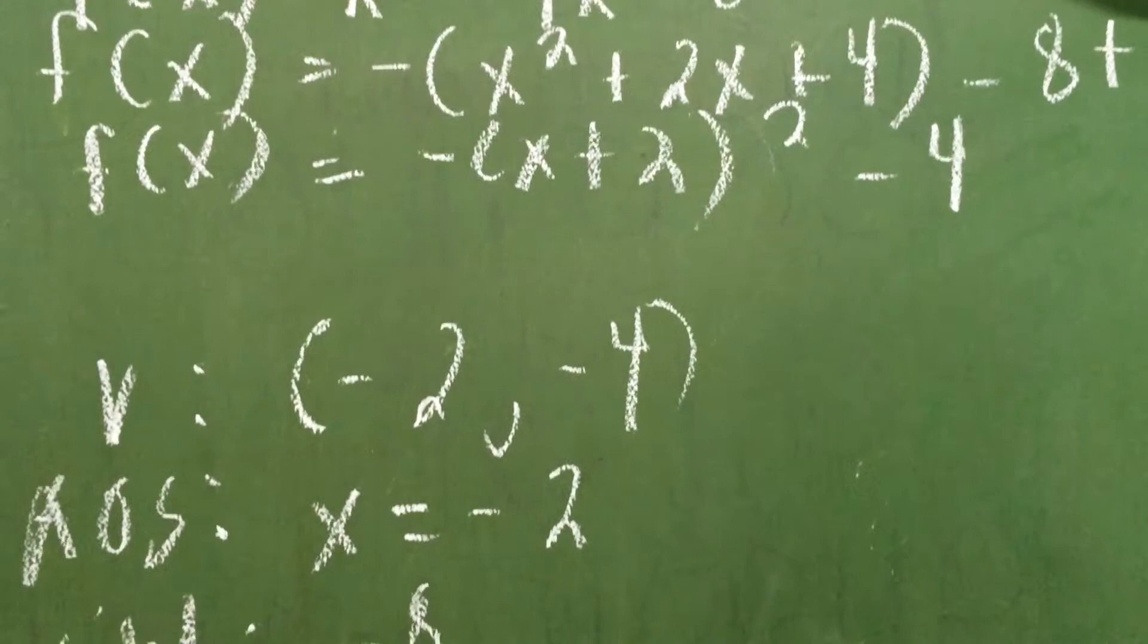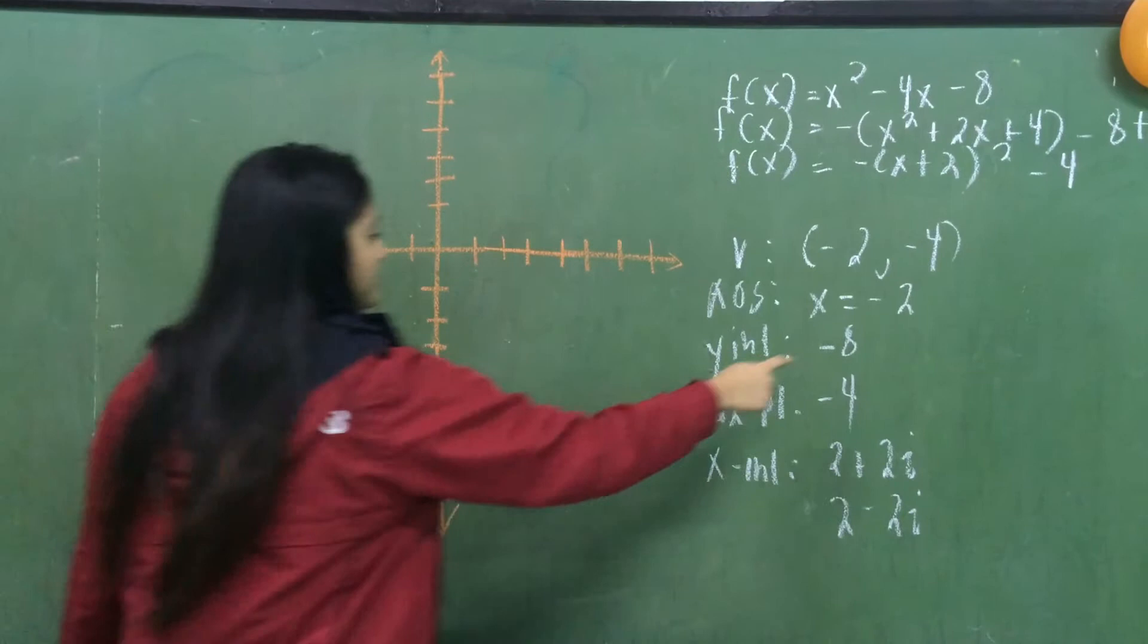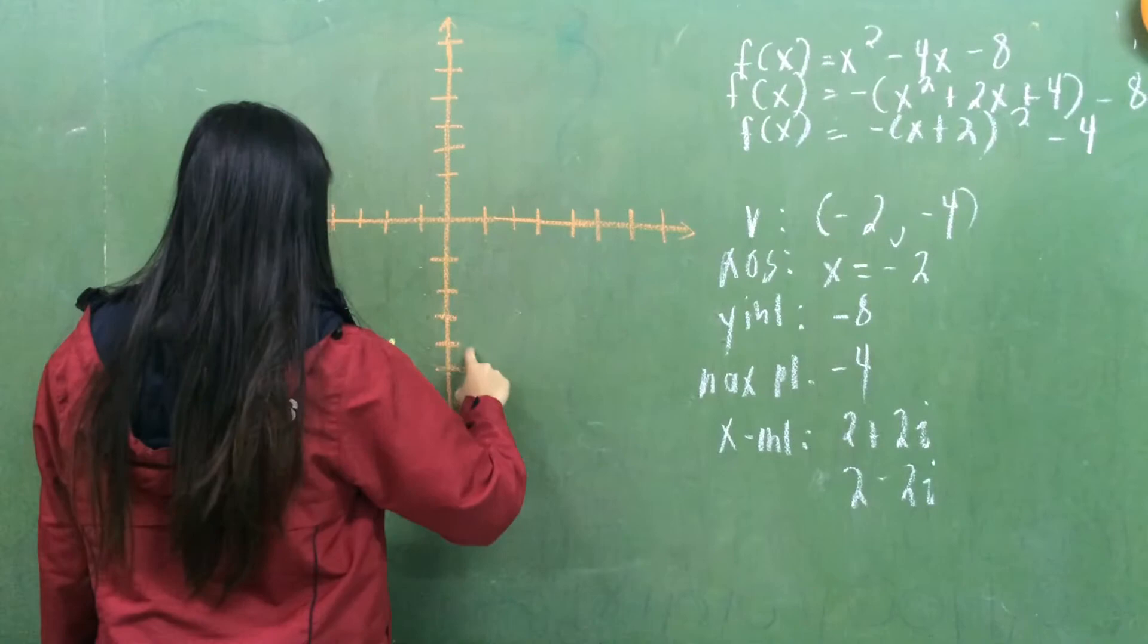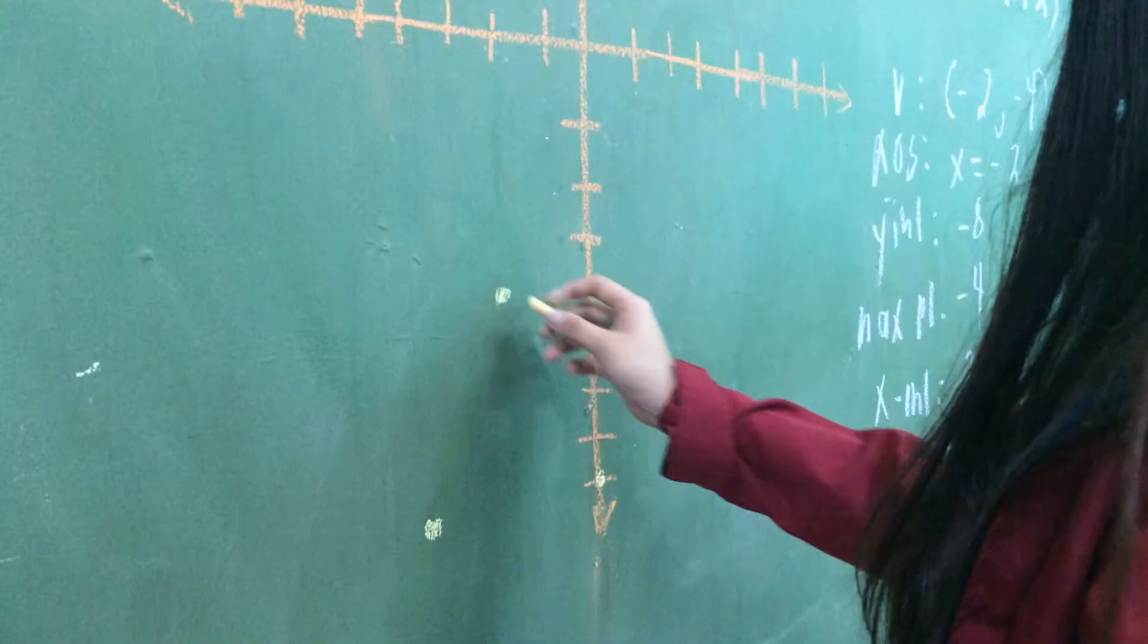We first graph the vertex, so (-2, -4). And then, we graph the y-intercept, -8. And now, we get the axis of symmetry by counting 1, 2 steps to the left. And then, do the parabola.